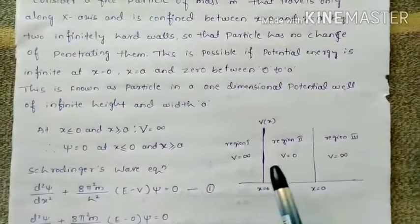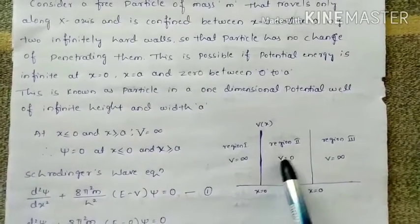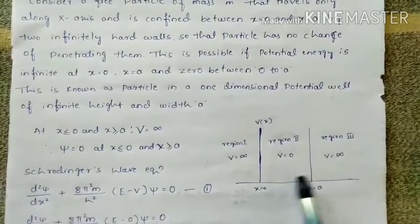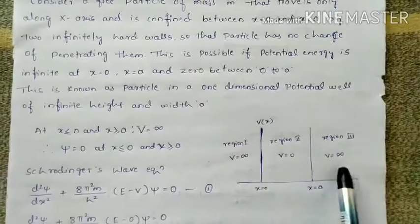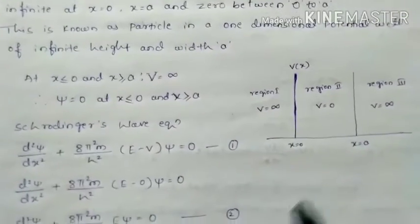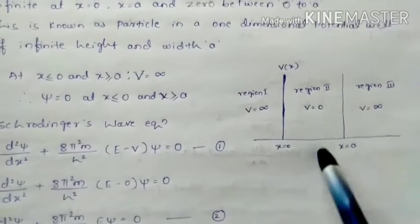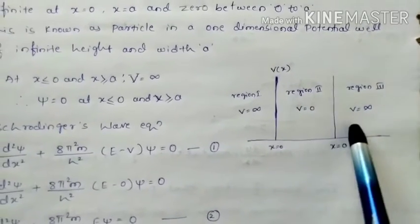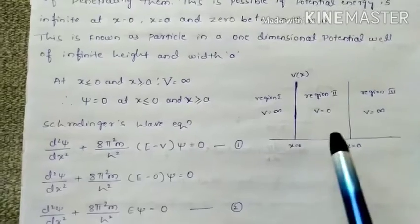In the figure you can see a particle is stuck here where the potential energy is 0. On both sides, the particle is confined between very high potential, that is V equals infinity. It is like a person who is stuck between two infinite height walls where he cannot jump over them and cannot penetrate through the walls. This is the condition of a particle in an infinite potential well.